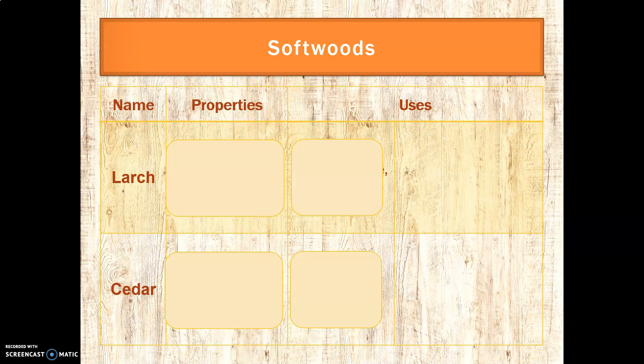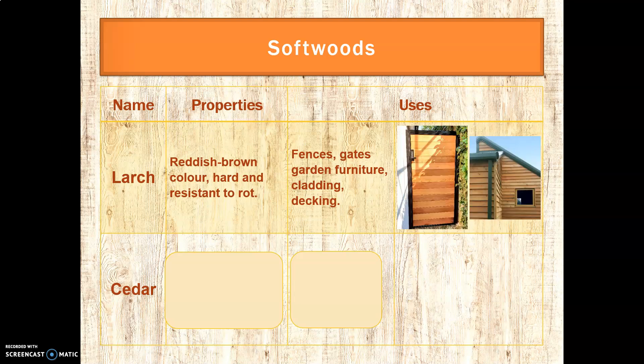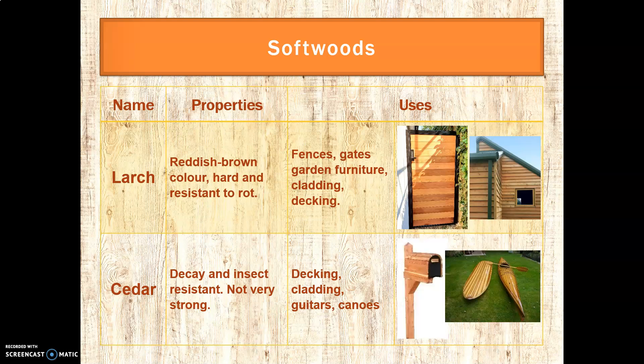Our last two softwoods are quite similar. Larch is a reddish-brown colour, quite hard, and importantly resistant to rot — so mould, bacteria, and insects are less likely to get in. It's used for outdoor furniture, fences, gates, cladding, and decking. Cedar is very similar — also decay and insect resistant — and comes in a variety of colours, including yellow cedar and red cedar. It's used for decking and cladding, but also guitars and canoes, particularly in Canada.